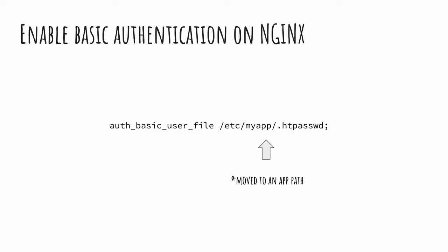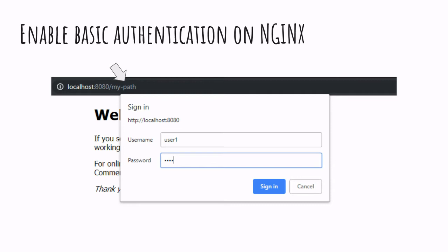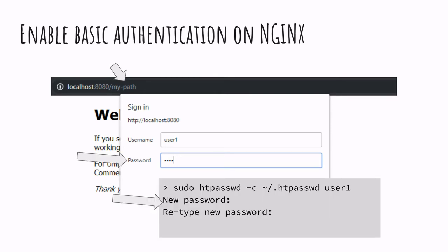Once we set these two directives on a location, for example, we now have a protected location behind basic authentication. The password that would be needed when the prompt comes up is the password that we created during the creation of the password file with htpasswd.